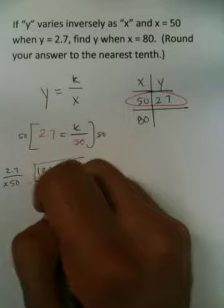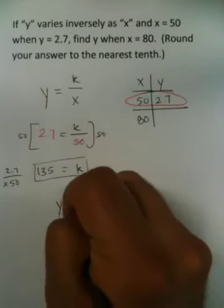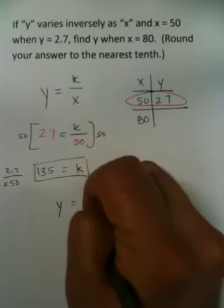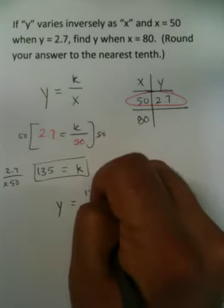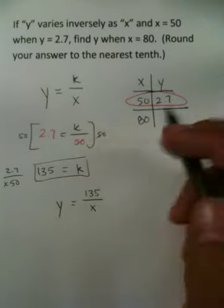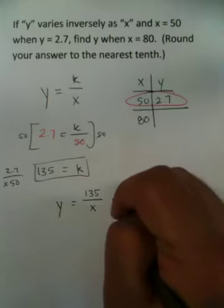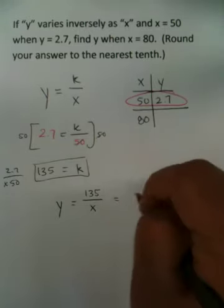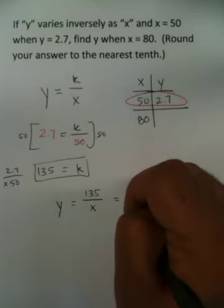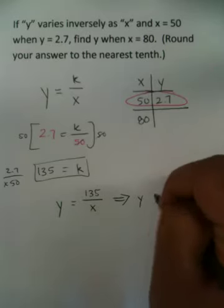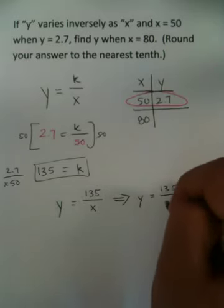Now that you know what k is, what happens is you say, all right, sweet. I know what k is. k is 135 all over x. Now I can find out what happens when x is 80. So what you're doing is you're saying, let's make y equal 135 all over 80.